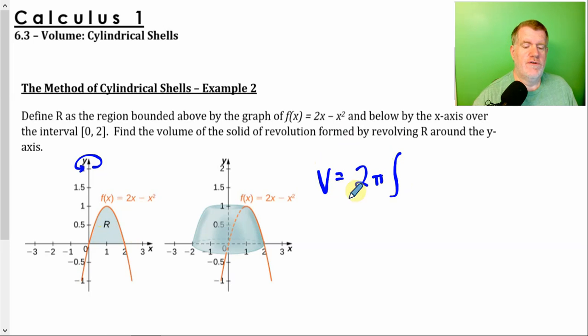But the shell method, the same formula, 2π. The x's are going from 0 to 2. x times the function, which is 2x minus x squared dx. That's it. Solve that, and we're good. That looks like a point. I'll try that again.